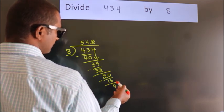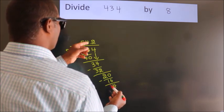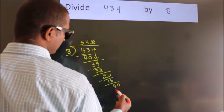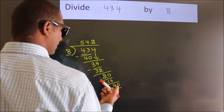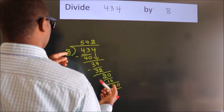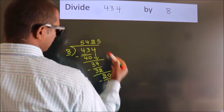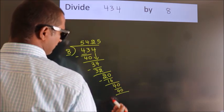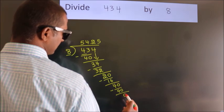After this, we already have the decimal, so directly we take 0. So 40. When do we get 40? In the 8 table, 8 fives 40. Now we subtract, we get 0.